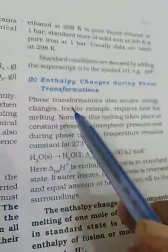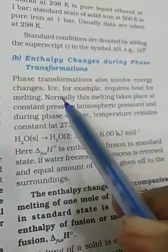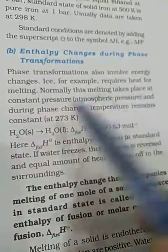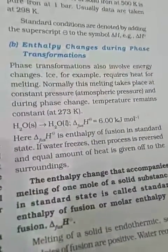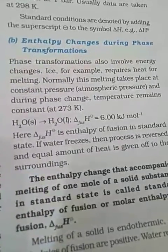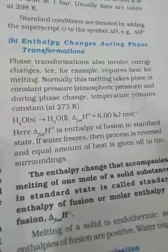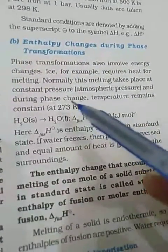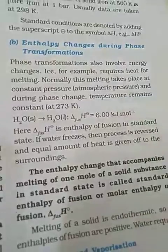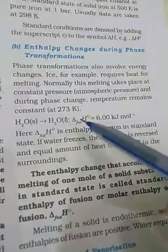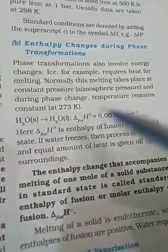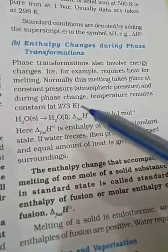Next topic B: enthalpy change during transformation. Phase transformation also involves energy changes. Ice, for example, requires heat for melting. This melting takes place at constant pressure — atmospheric pressure, 1 bar — and during phase change, temperature remains constant at 273 Kelvin.